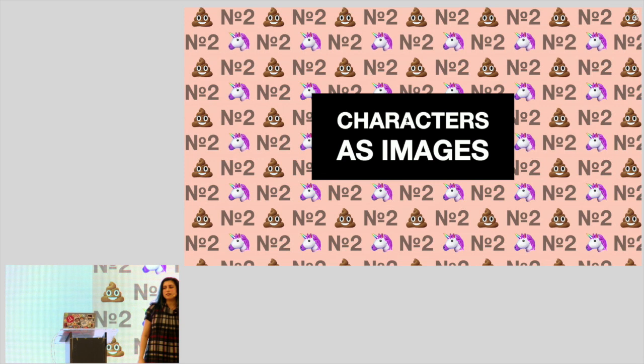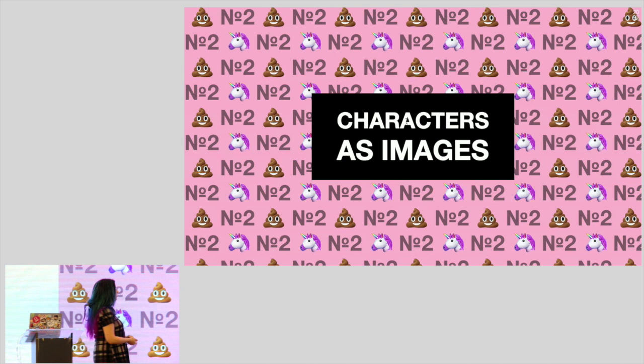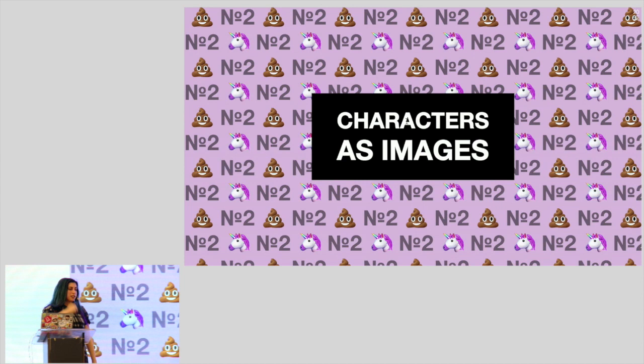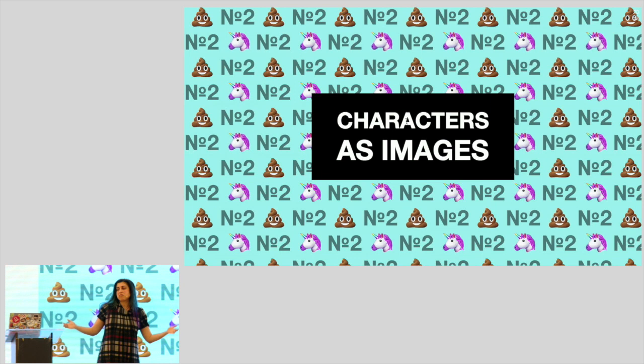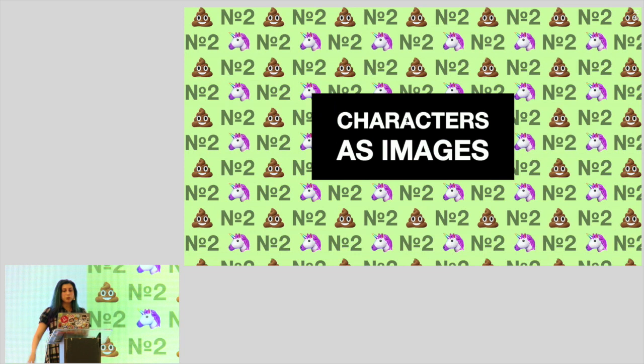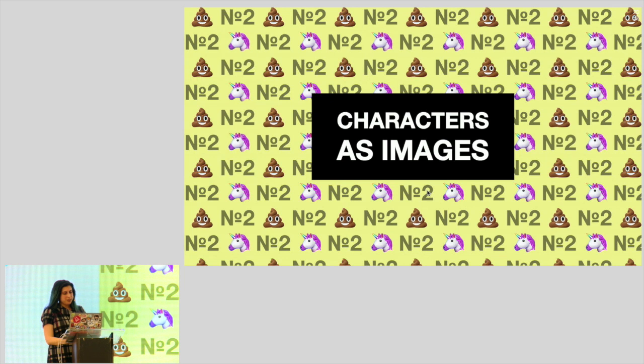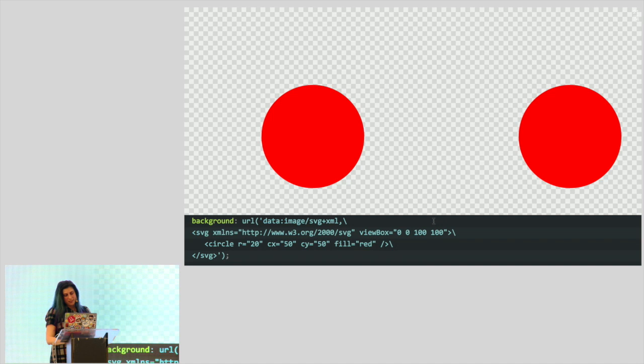The next thing I want to share is Characters as Images. How many times have you needed to use actual text — like an emoji, a special symbol, or a fancy quote — as a background image or in CSS as an image? There was really no way to do it except opening Photoshop, pasting in the character, and exporting it as an image. It turns out there is a way to do this straight in CSS, and that way is called SVG in a data URI.